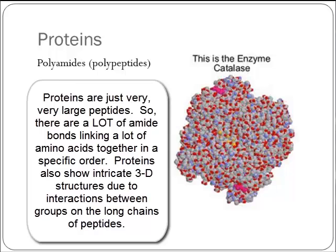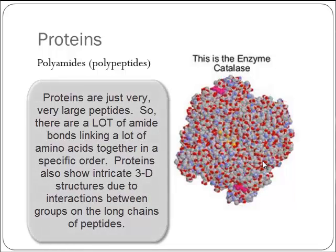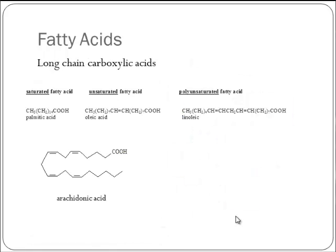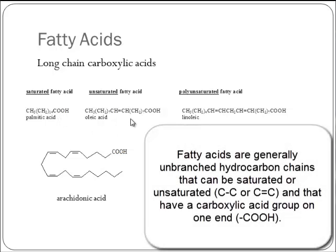What's a protein? It's just a giant version of what we just looked at — somewhere deep in all of that structure are a huge number of amide bonds. Fatty acids are another biological molecule with a recognizable functional group. These are long-chain carboxylic acids, though recently people are also talking about short-chain fatty acids. These are generally hydrocarbon chains of some length with a carboxylic acid on one end.